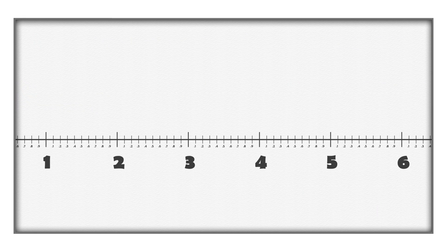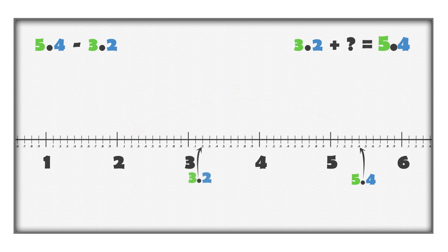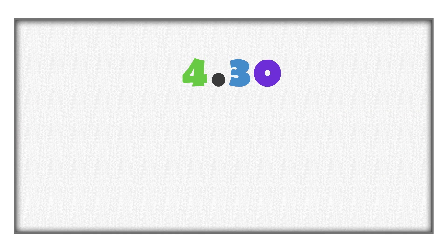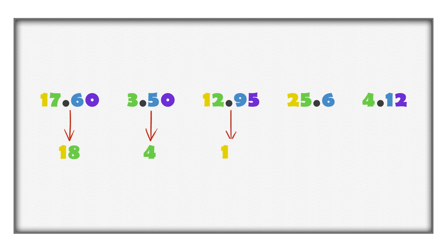Another helpful model for subtracting decimals is a number line. A number line can be used to represent the size and position of decimal values. When we subtract, we move to the left along a number line. A strategy for subtracting numbers is to think of the question as an addition problem and add up from the smaller number to the larger number. When we add up, we move to the right along a number line. Sometimes it helps to think about the values as dollars and cents. It is important to use estimation as a strategy to check your work and confirm your answers.